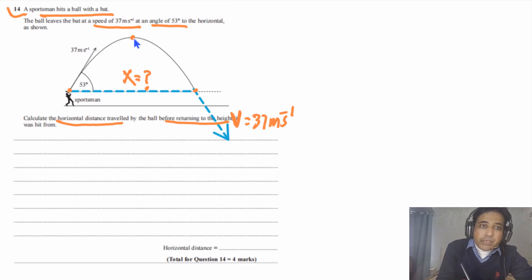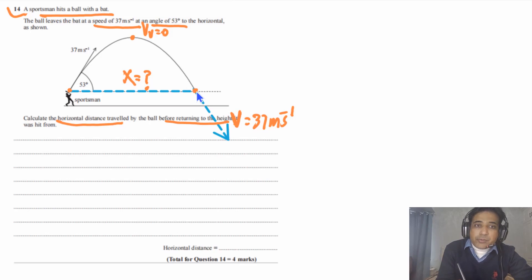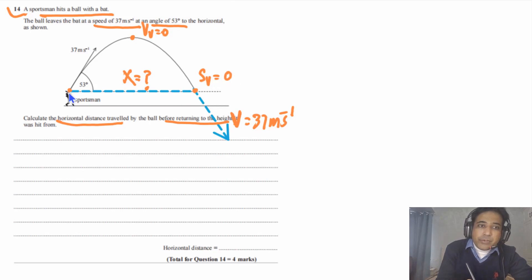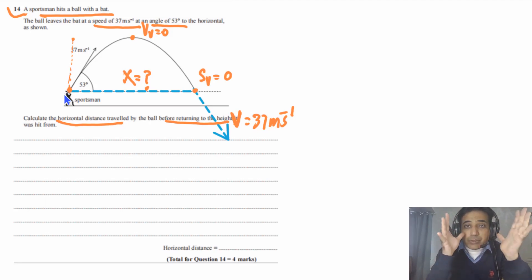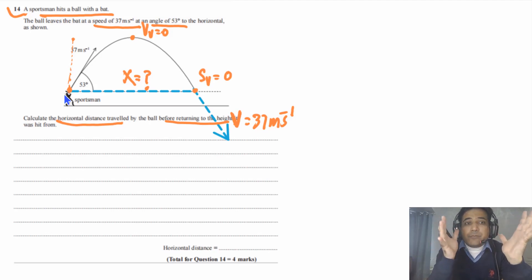We can also say the vertical component of velocity at the landing point has to be zero. We can also infer from this graph that the vertical displacement sᵥ has to be equal to zero, because the ball started from this height and came back to the same height. So the ball went up and came back to the same point — vertical displacement equals zero. These are the key pieces of information we have.